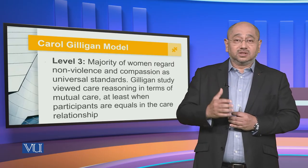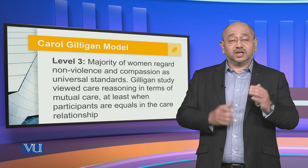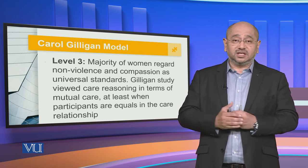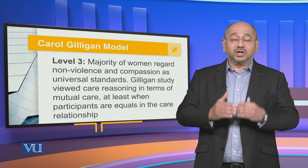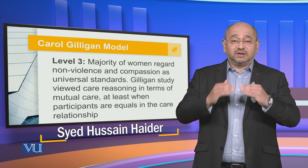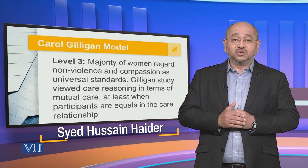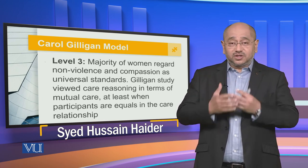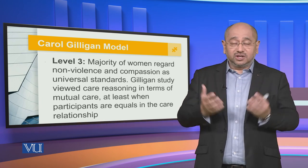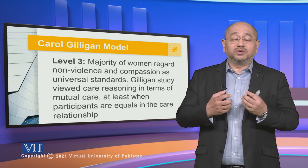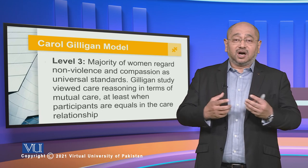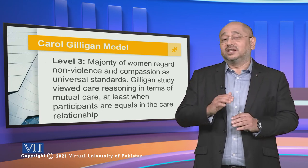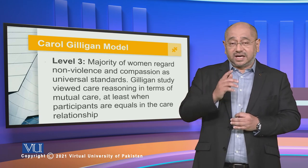The Gilligan model revolves around care, compassion, consideration, mutual trust, understanding each other, and caring for each other on an equal level playing field — without exploitation, manipulation, or encroachment. This model sees moral development on the basis of human relationships and how those relationships can be defined in different circumstances and different contexts. That is the Gilligan model.